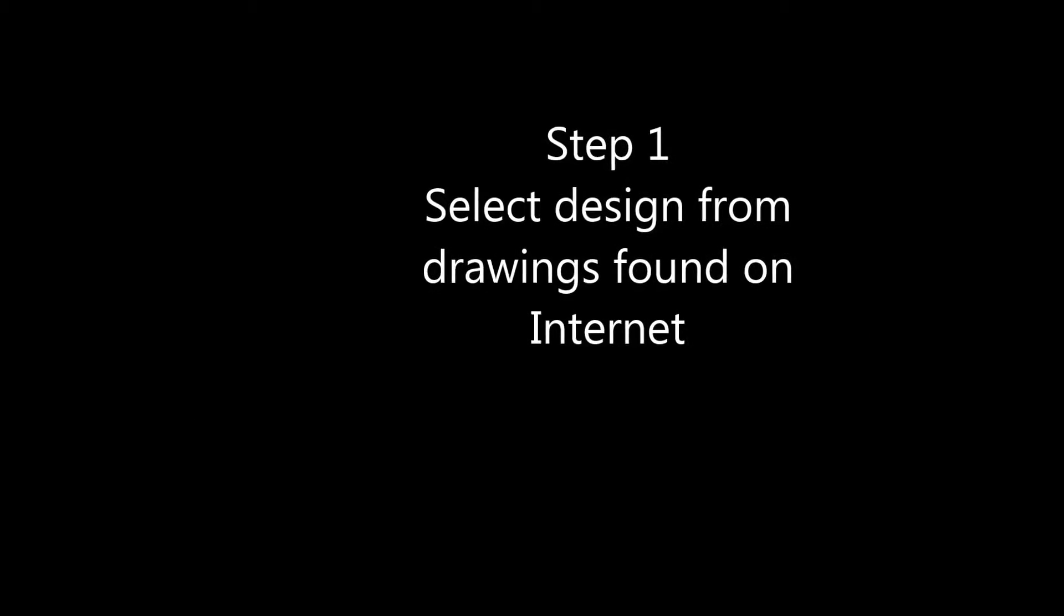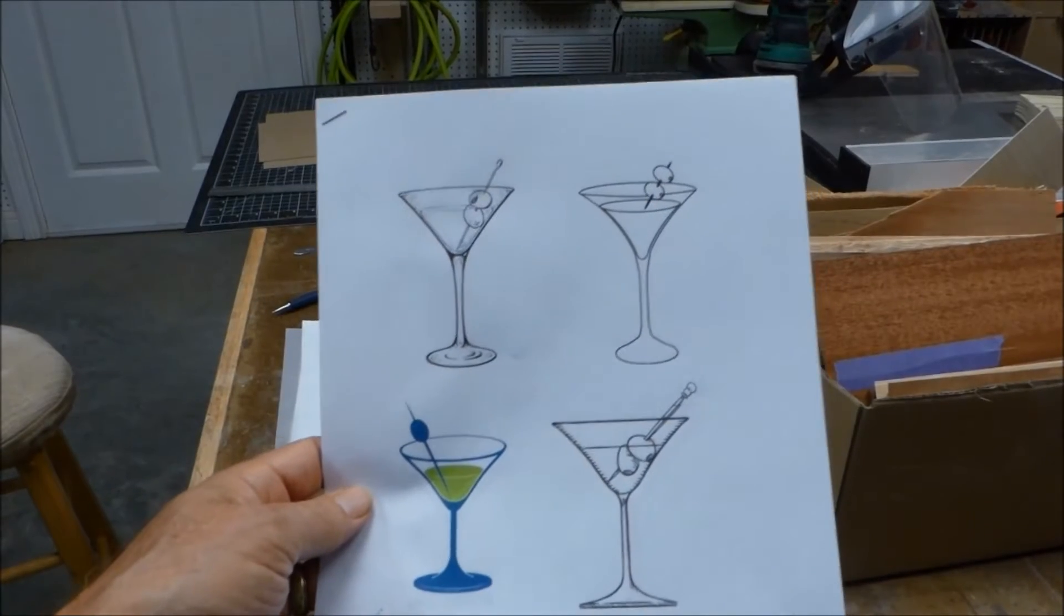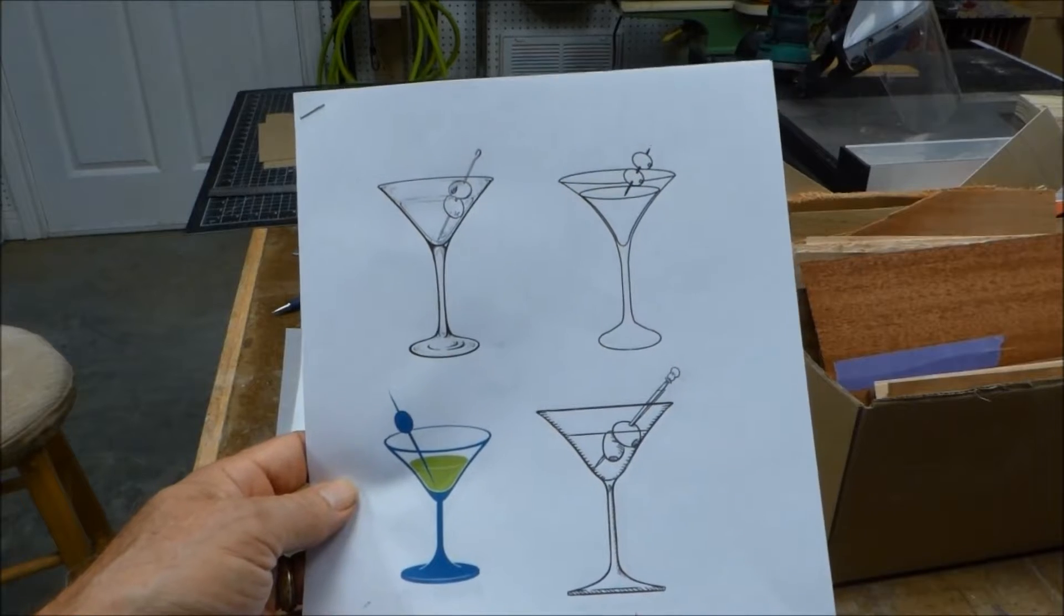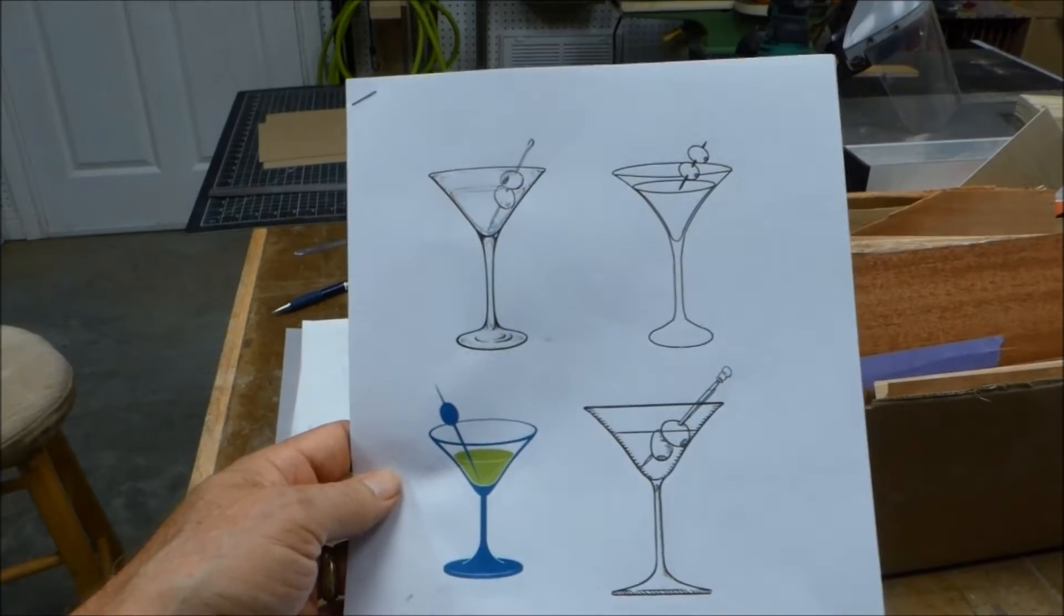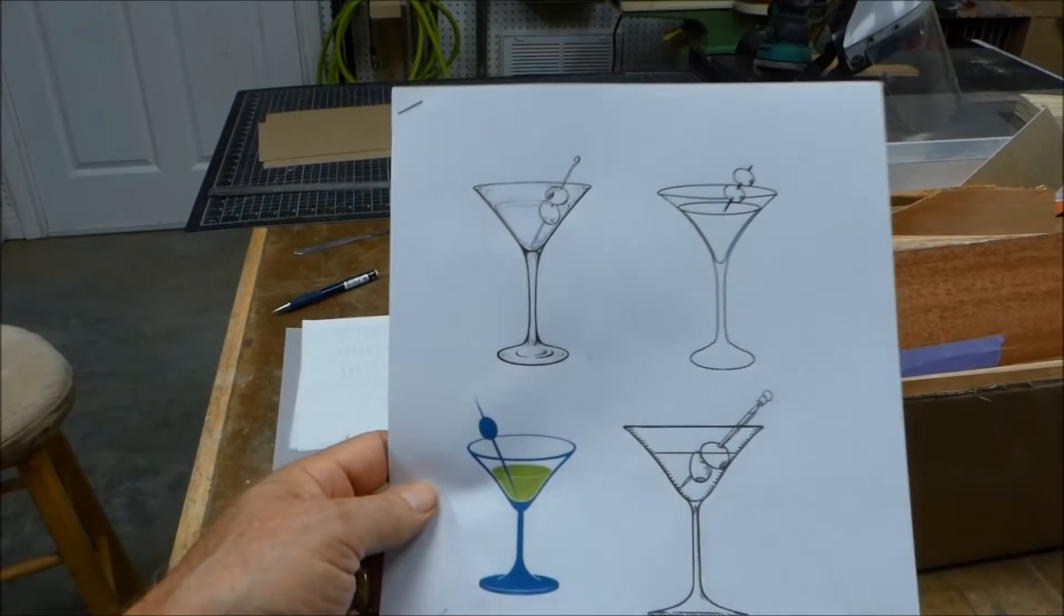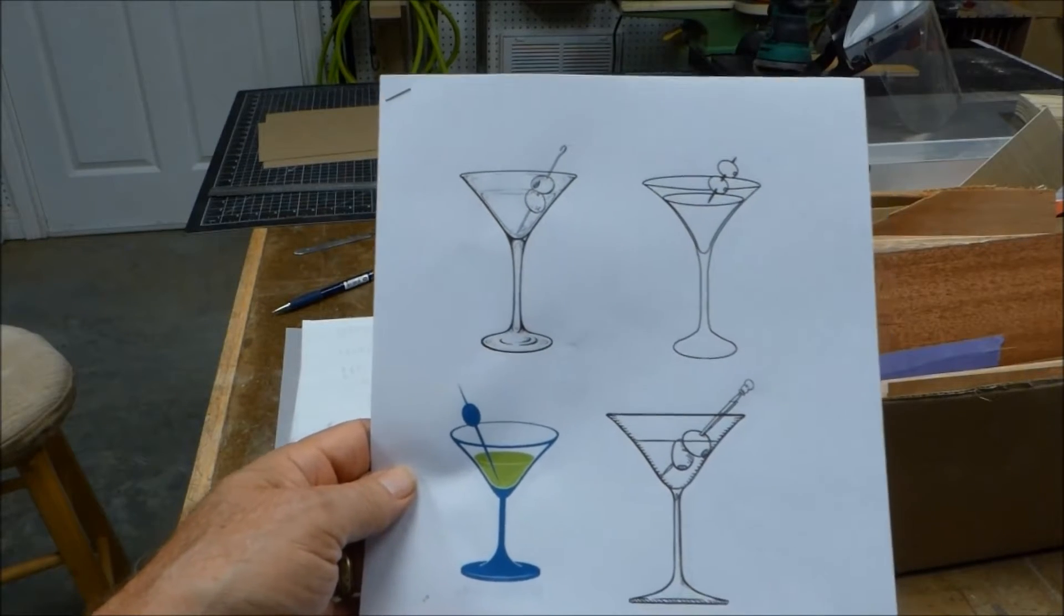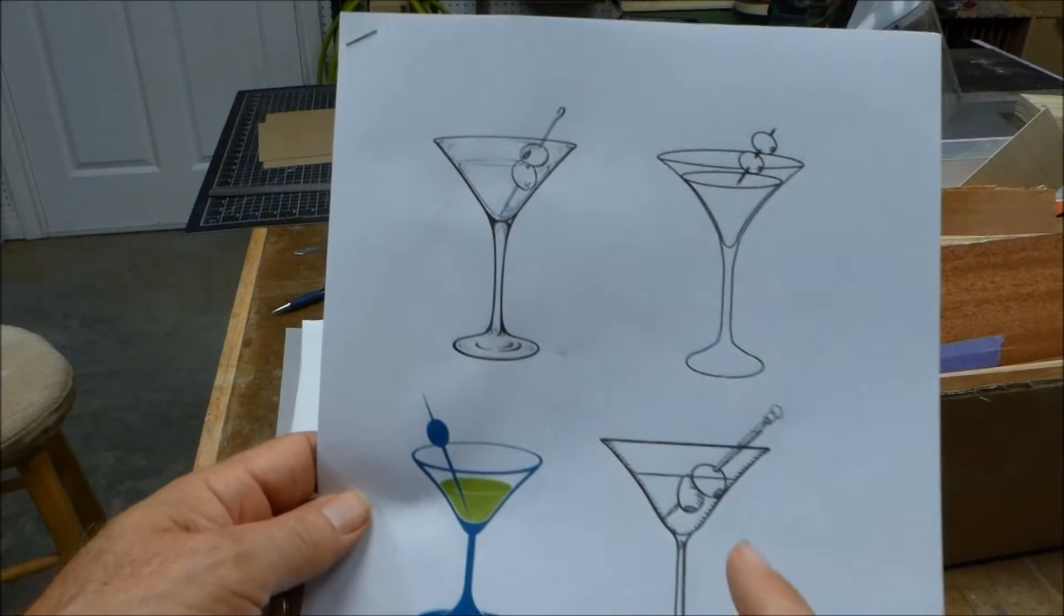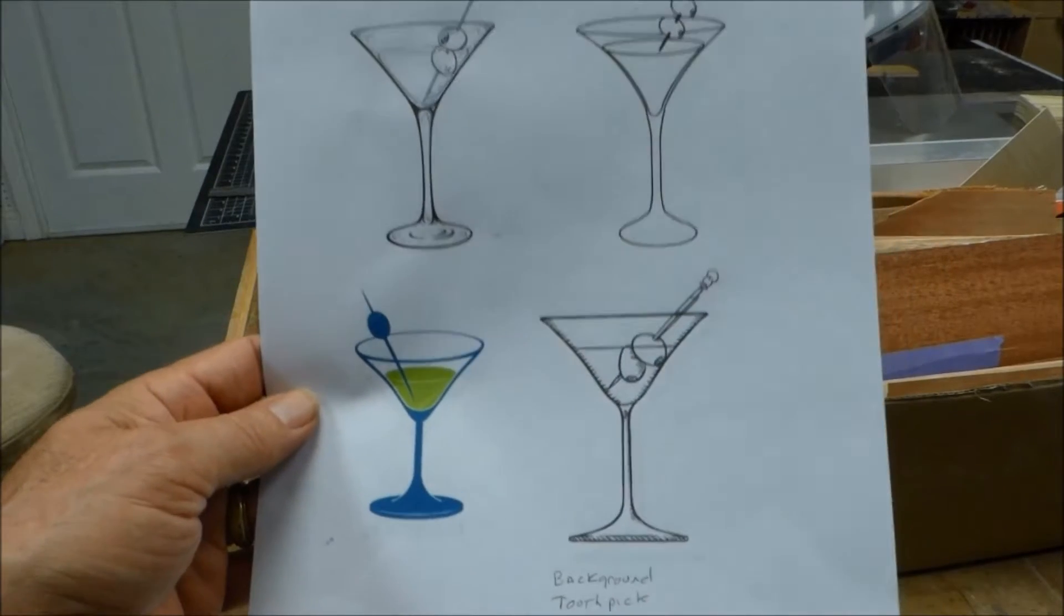Step 1 is to find a design. If you're an artist you can create your own, but if you're like me, you find drawings on the internet. I found these by simply searching for martini glass with olive, and these are four that I liked. I picked the one in the bottom right corner there.